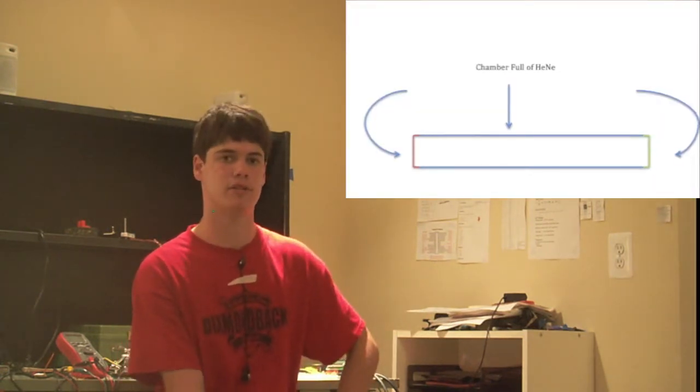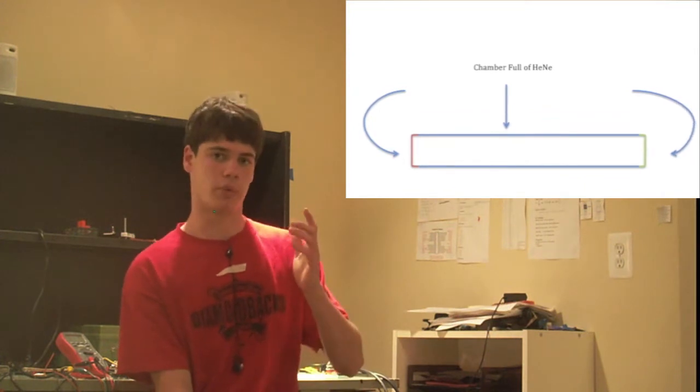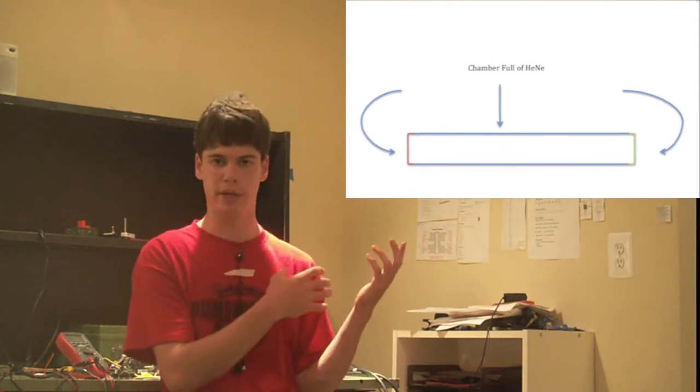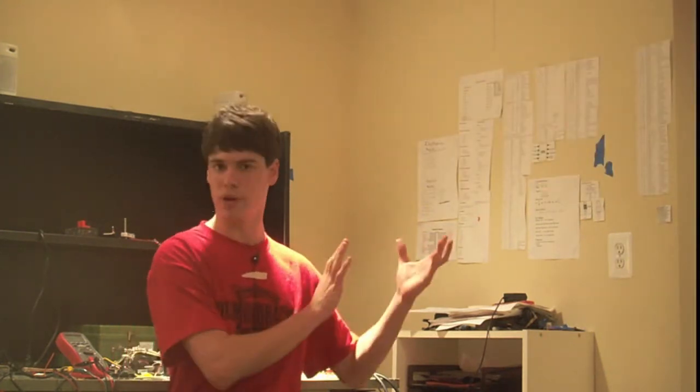You have a tube of gas. So argon, neon, helium. Helium-neon lasers are pretty common. So we'll go with one of those. Say we've got helium-neon in this laser. And at either ends of this sealed tube full of helium and neon, or whatever gas you can use, really - carbon dioxide lasers - are two mirrors.